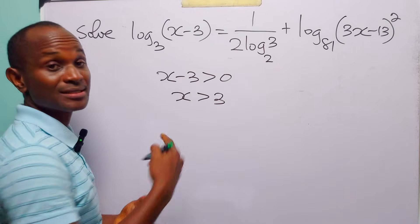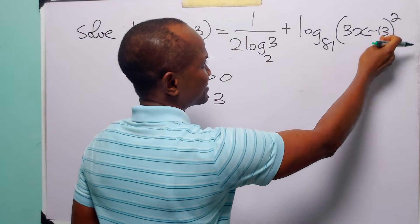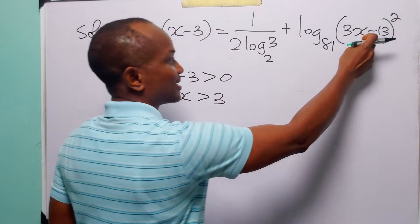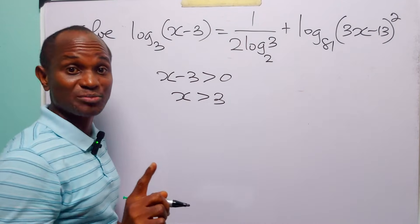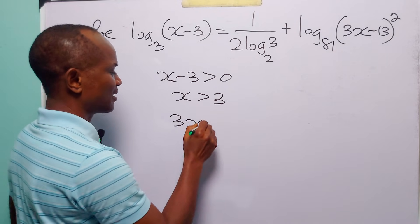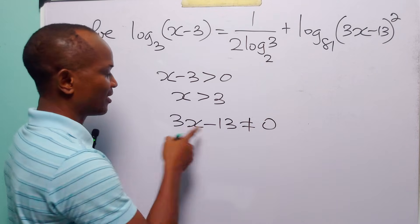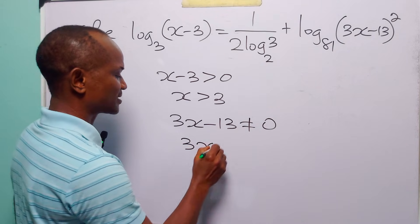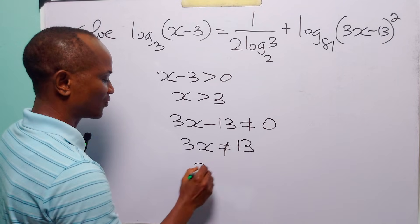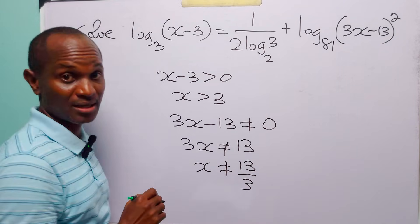Now, this is a constant. In this case, since 3x minus 13 squared is always going to be positive, then 3x minus 13 must not be equal to 0. So, we have that 3x must not be equal to 13, and of course x must not be equal to 13 over 3.